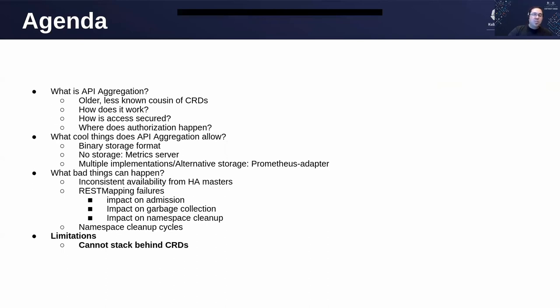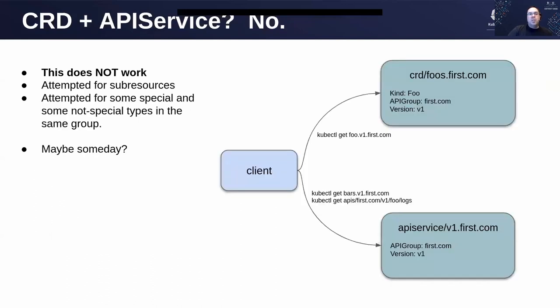Now the limitations. Aggregated API servers can do things no other technique allows. But one thing they cannot do is coexist in the same group version with a CRD. If you have an API service for v1.first.com, you cannot create CRDs in first.com. This means you cannot use aggregated API servers to create subresources for a CRD, and you cannot mix special storage types with a standard CRD either. Maybe someday this will change, but as of right now, you can't. That is all I have about aggregated API servers — I hope you found it interesting.